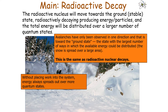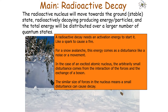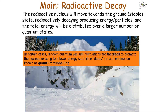Like an avalanche going down a mountain, radioactive decays are observed in one direction — towards the ground state, the state with the largest number of ways the available energy can be distributed. Without placing work into the system, energy always spreads over more quantum states. Radioactive decay also needs an activation to start it, like a spark causing a fire. For an excited atomic nucleus, this arbitrarily small disturbance comes from the interaction of forces and the exchange of a boson. In certain cases, random quantum fluctuations are theorised to promote the nucleus to relax into a lower energy state, which is quantum tunnelling.